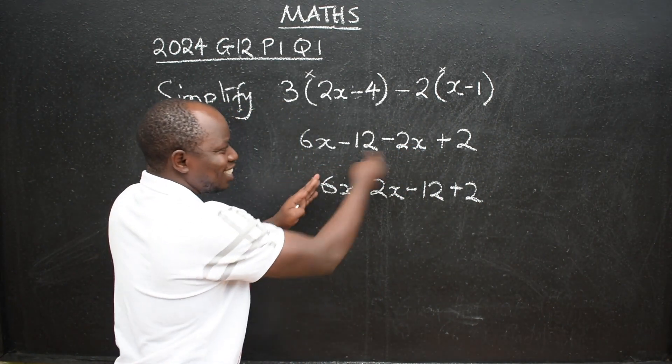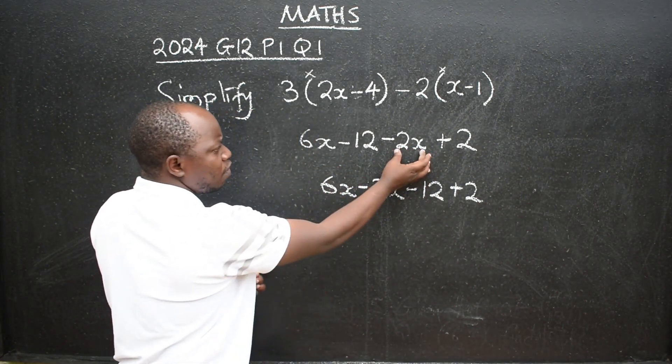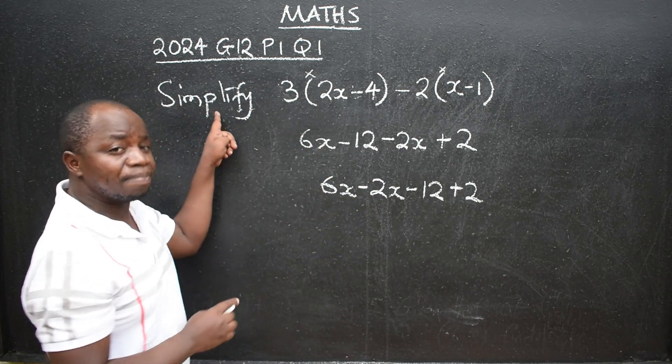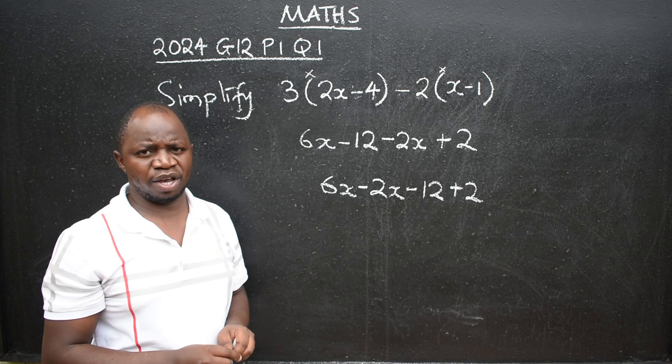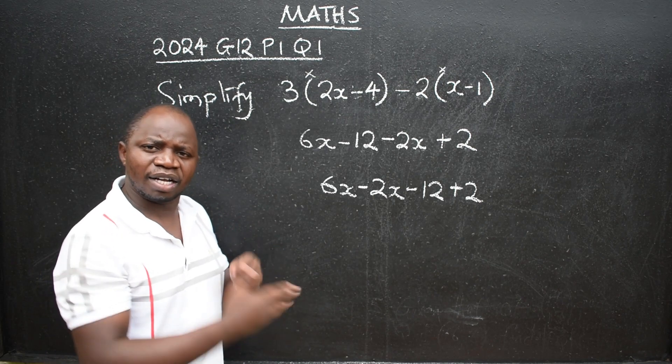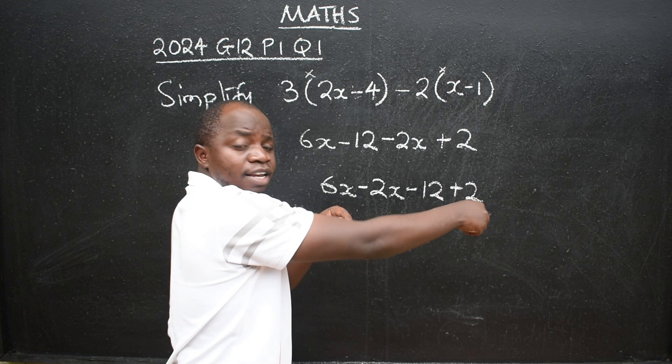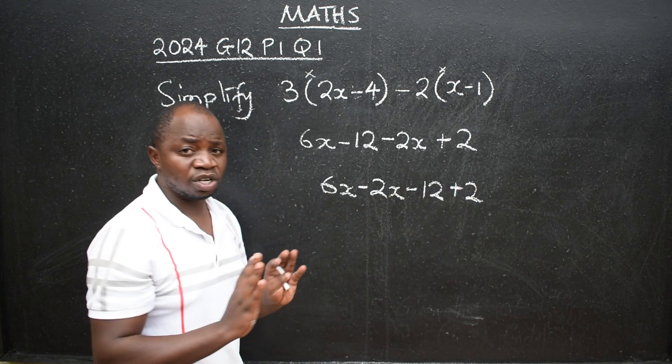Don't change signs here to say negative 2x has come here, therefore this will be positive. No. You are simplifying. You are not solving an equation. Only when you are solving an equation, that's when you should be able to change when it crosses the cosine. But in this case, no change of sign.